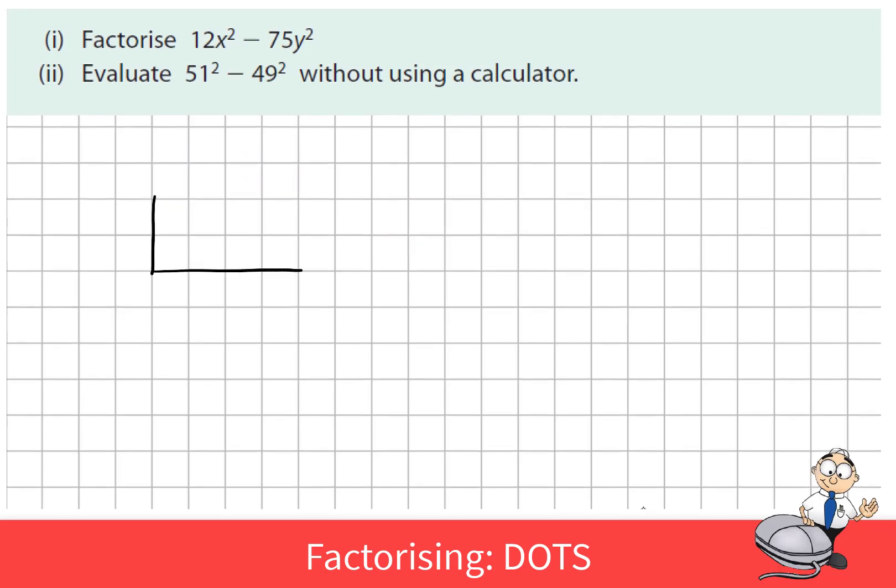In the final part of this question we're asked to evaluate 51 squared minus 49 squared without using a calculator. So we have the difference of two squares, so again we could use our quadratic grid. So we would think about the factors of 51 squared, that would be 51 by 51. The factors of negative 49 squared would be negative 49 by positive 49.